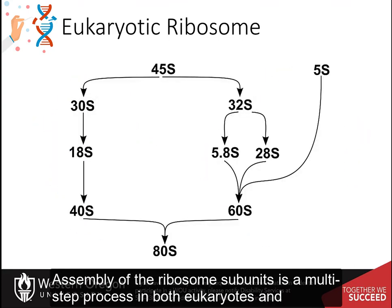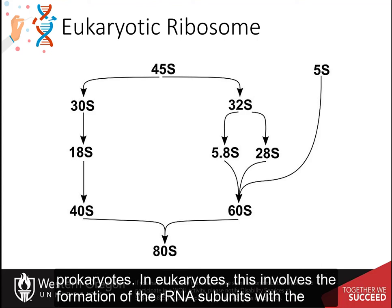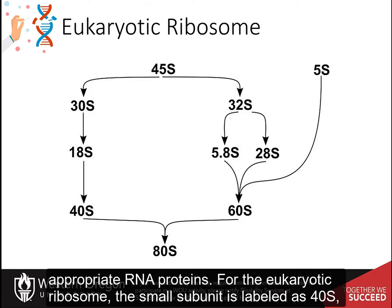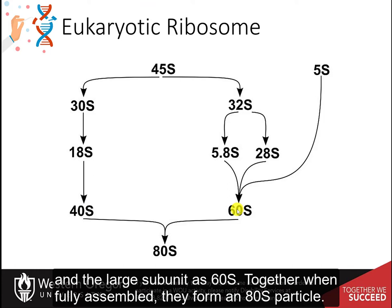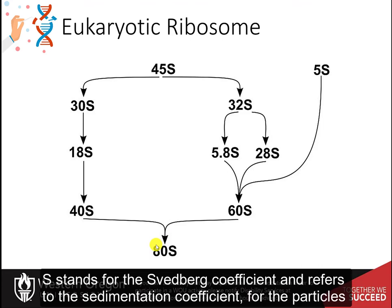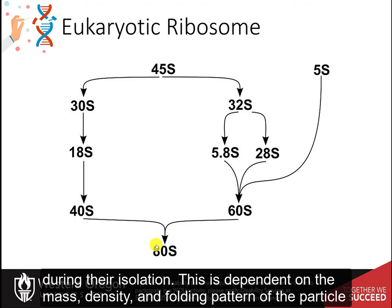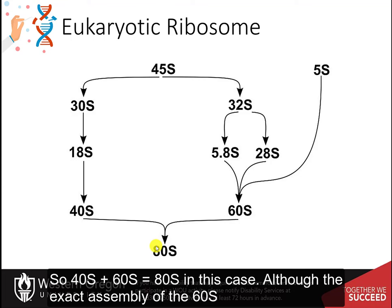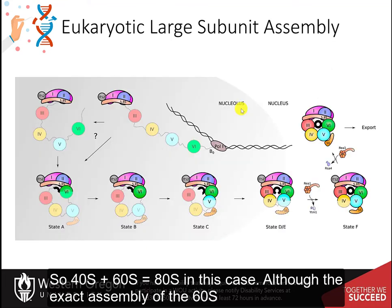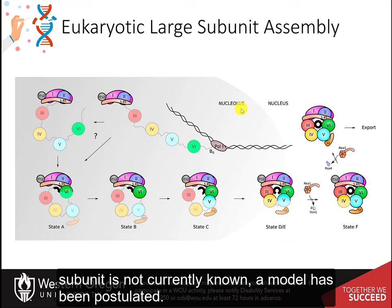Assembly of the ribosome subunits is a multi-step process in both eukaryotes and prokaryotes. In eukaryotes, this involves the formation of the rRNA subunits with the appropriate RNA proteins. For the eukaryotic ribosome, the small subunit is labeled as 40S and the large subunit as 60S. Together, when fully assembled, they form an 80S particle. S stands for the Svedberg coefficient and refers to the sedimentation coefficient for the particles during their isolation, which is dependent on the mass, density, and folding pattern of the particles. So 40S plus 60S equals 80S in this case.